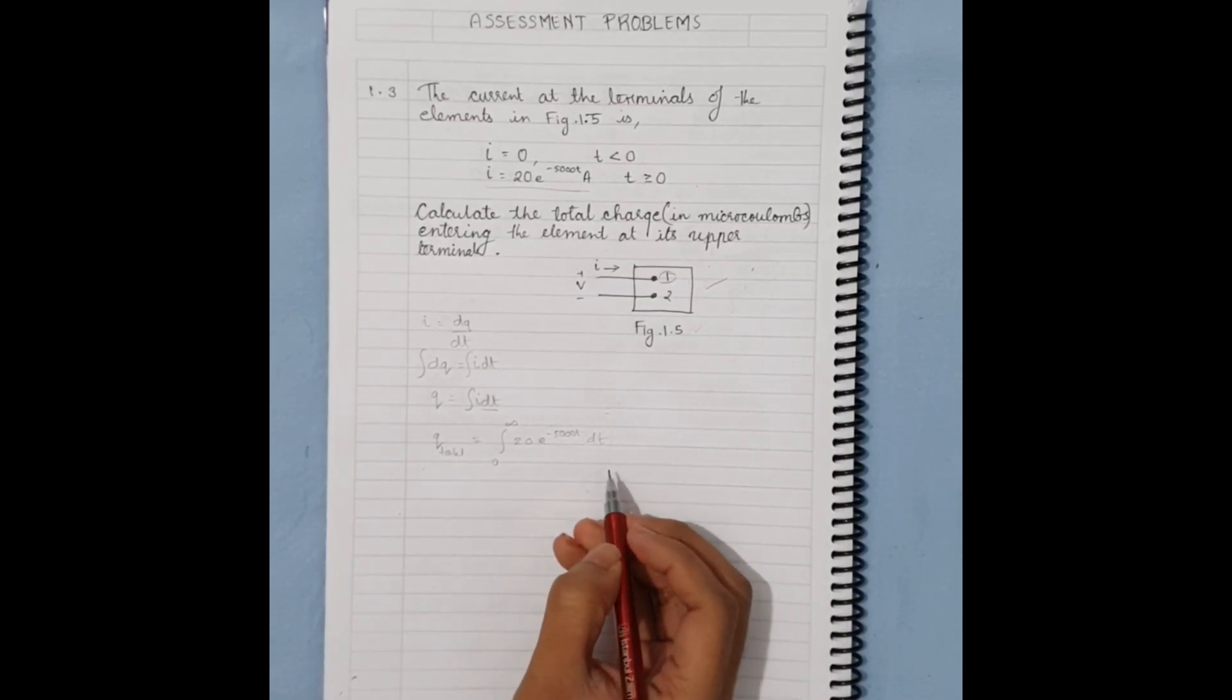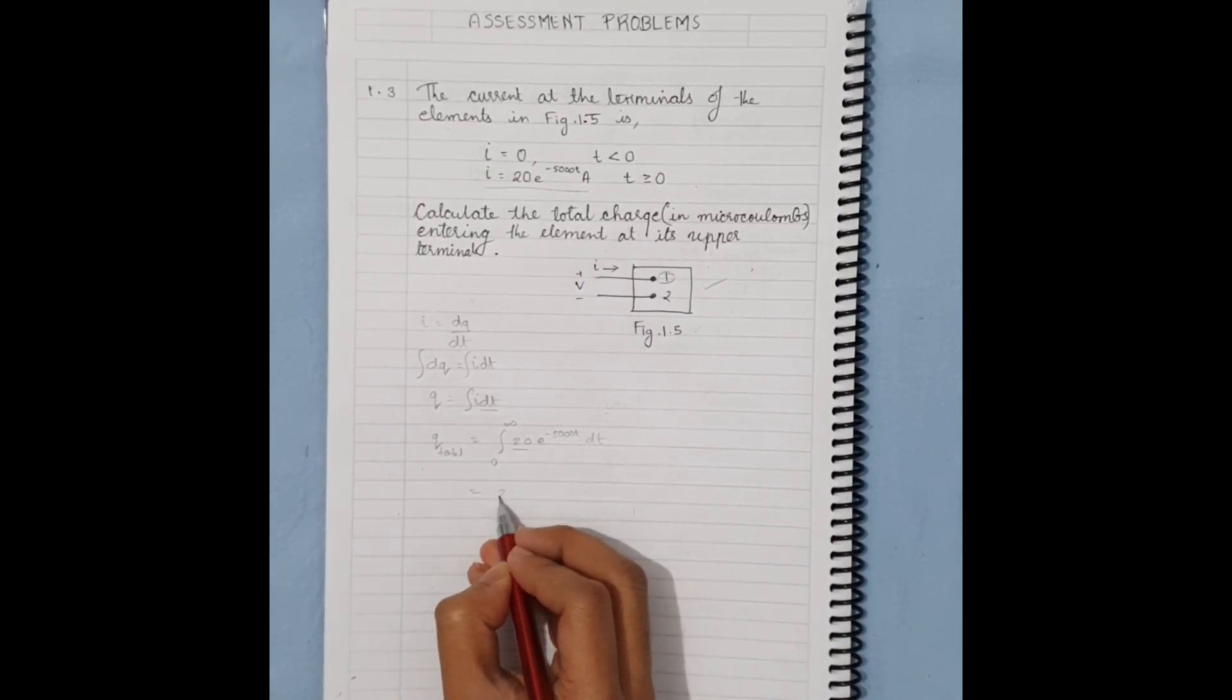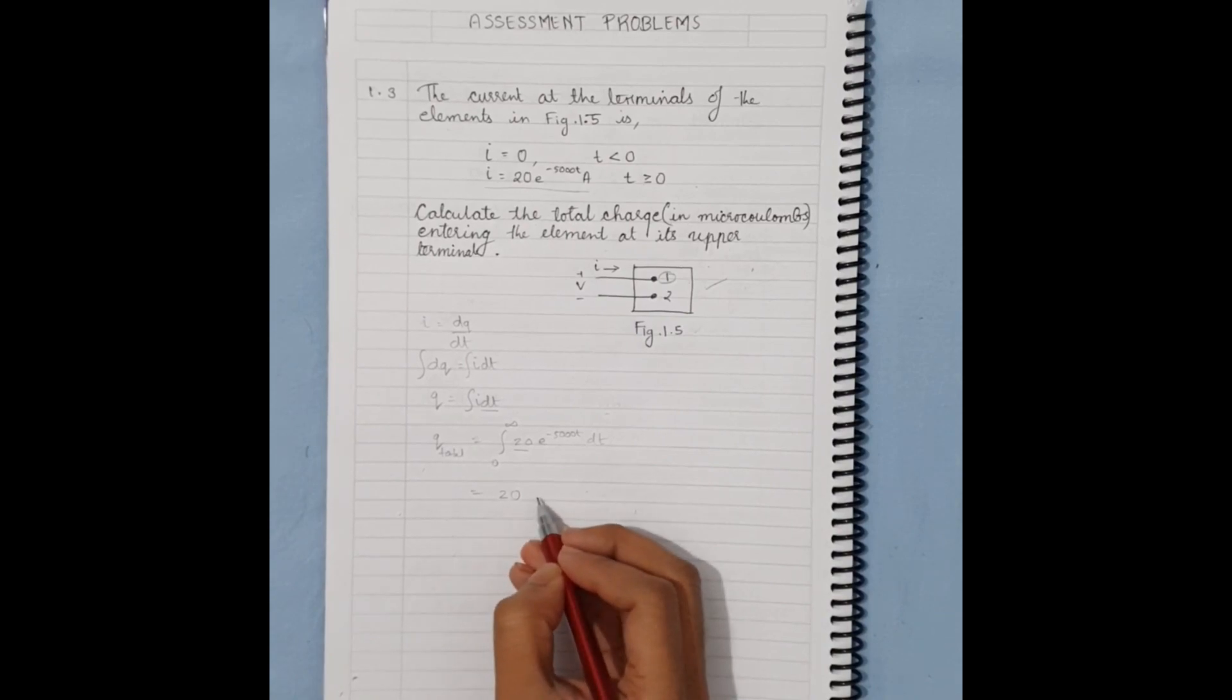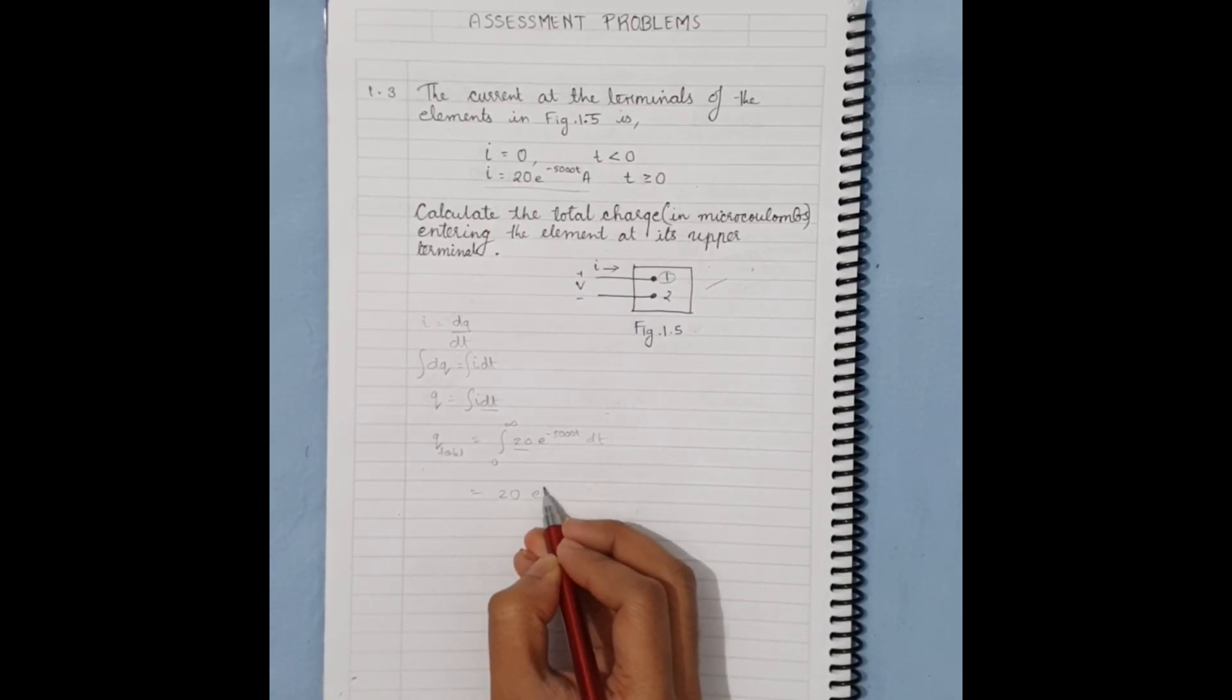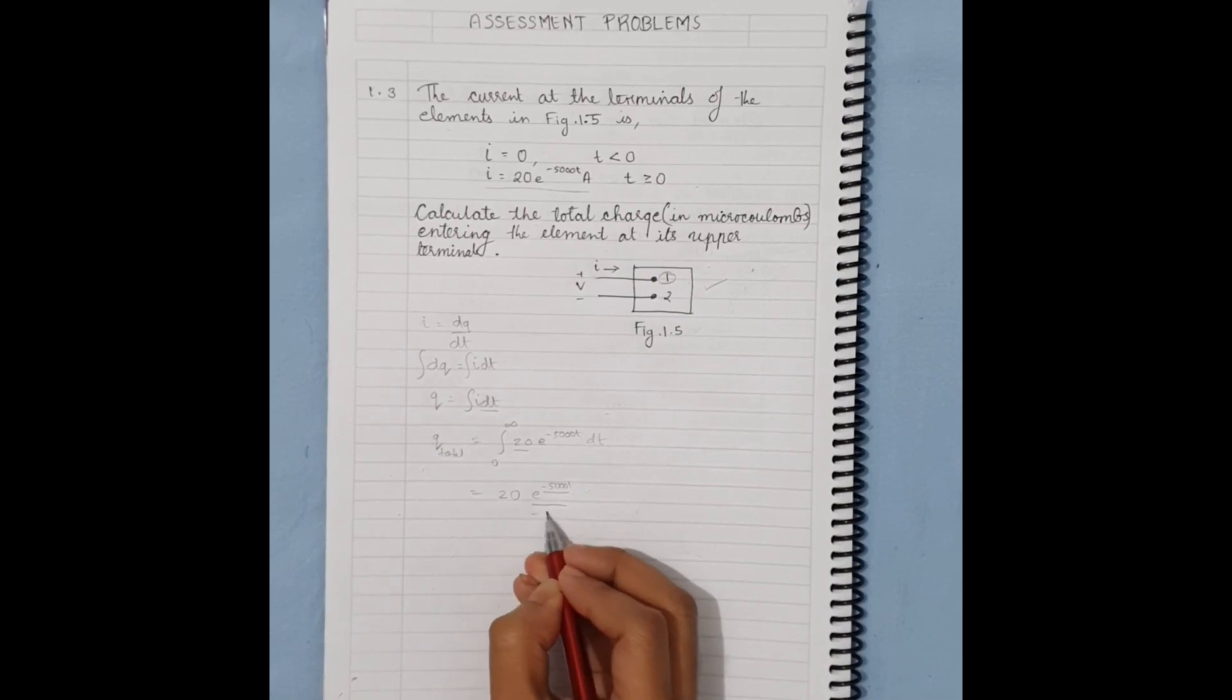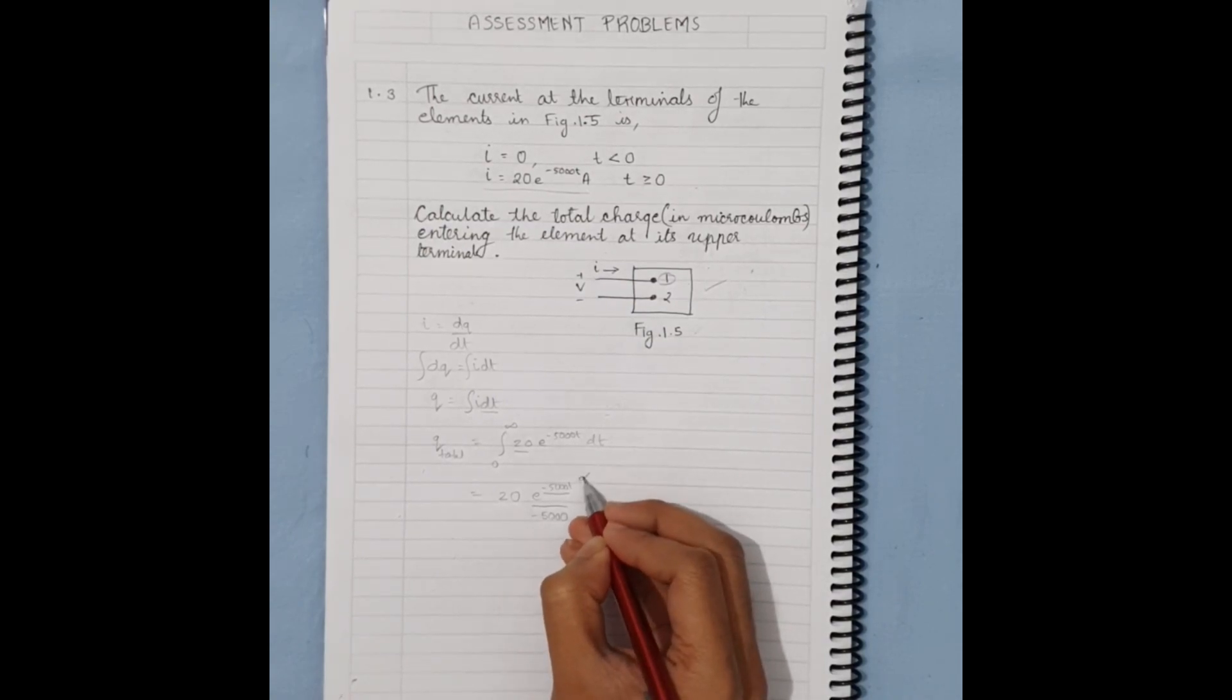If we integrate, 20 is a constant, and the integral of e^(-5000t) is e^(-5000t) divided by the differential of -5000t, which is -5000, and the intervals are from zero to infinity.